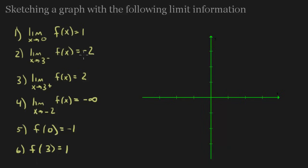Now notice the first four pieces of information have to do with limits and the last two are actually y values. So these are function values, that means they are actual closed dots on my graph.